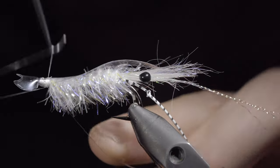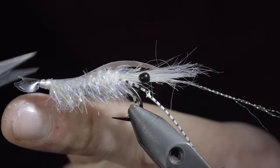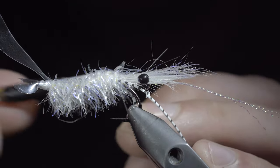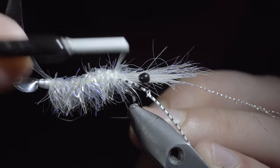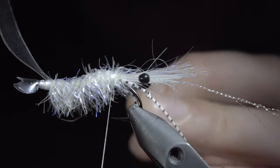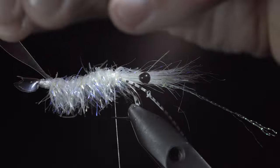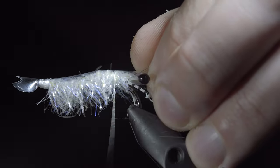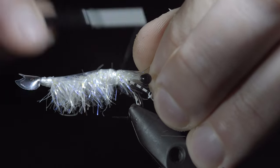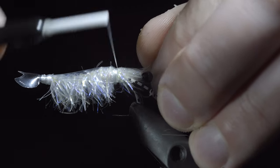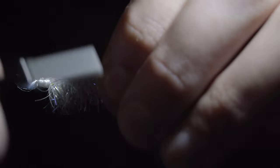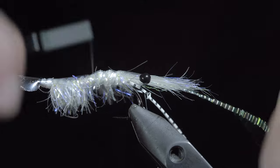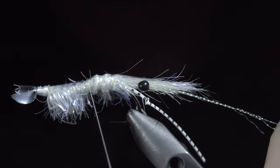With this complete, we can whip finish and snip our thread free, folding over our thin skin and reattaching our thread at the head of the fly. Snip the excess free and fold over your thin skin to secure it in place, being careful not to trap any fibers in the process. One way to prevent trapping fibers is to move your thread back and forth. Continue securing the thin skin and create a ribbing until we reach the head of the fly.